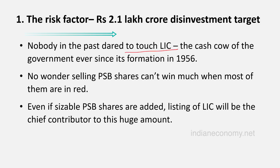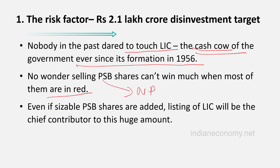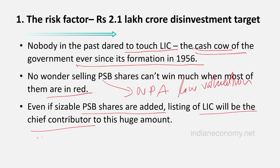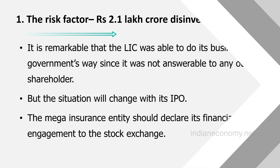We are now considering the case of LIC. Nobody in the past dared to touch the Life Insurance Corporation, which has been the cash cow of the government since its formation in 1956. Selling shares of public sector enterprises is difficult when most of them are in the red — facing NPA situations. Even if sizable PSEs are added, the listing of LIC will be the chief contributor to this huge disinvestment amount. The star of this disinvestment program is LIC.